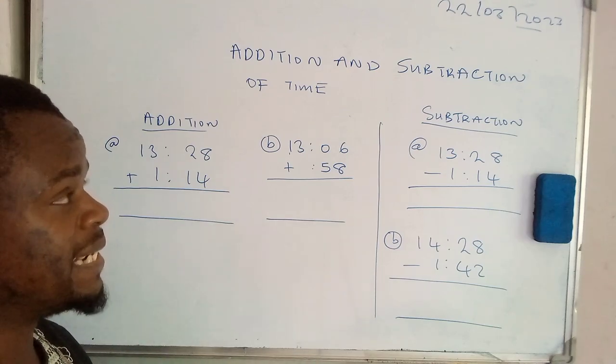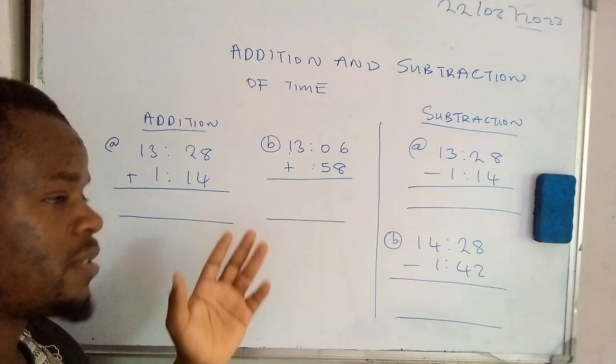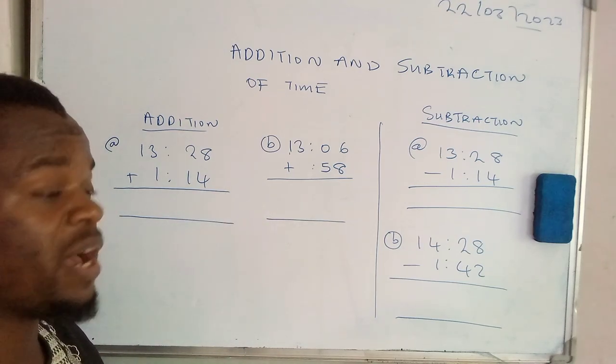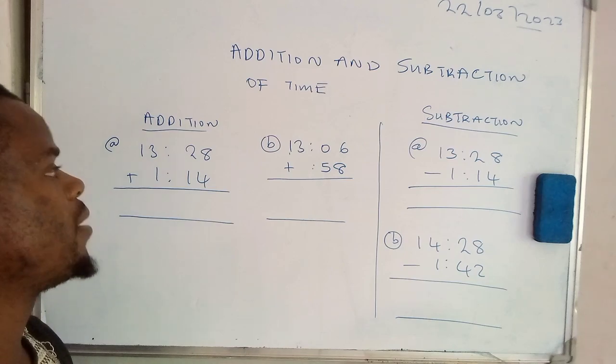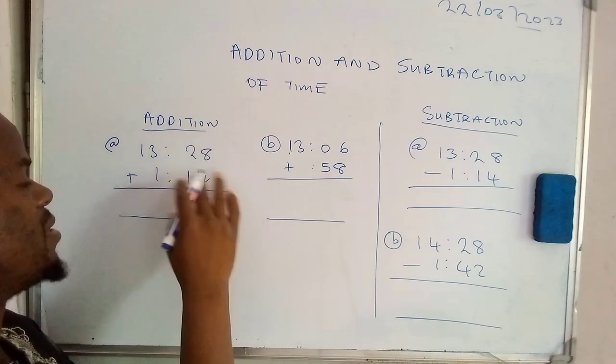Now let's look at how you can go about this. It's all about addition and subtraction of time. Let's look at the first examples where we have to add time. Under addition, we're going to add numbers the way we add them.